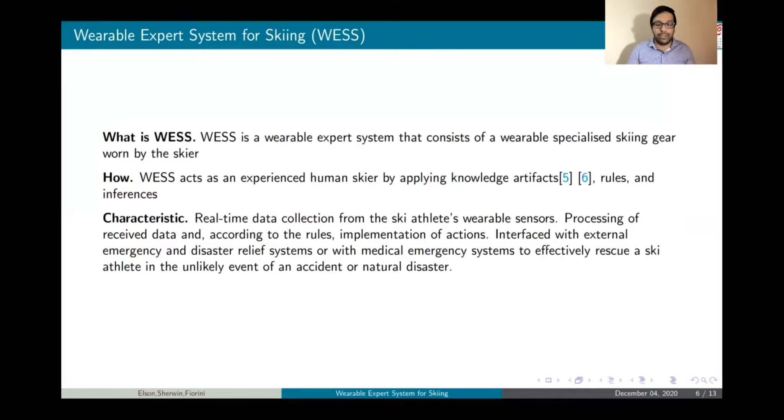WESS acts as an experienced human skier by applying the knowledge, artifacts, rules, and inferences. What are the characteristics of WESS? First thing is real-time data collection from the skier and the processing and receiving of data according to the rules which are stored in the system, and implements various actions. It can also be interfaced with different external systems such as emergency and disaster rescue systems to help the skier in case of any emergency or mishap, so that the skier's life is not affected by any accident or natural disaster.